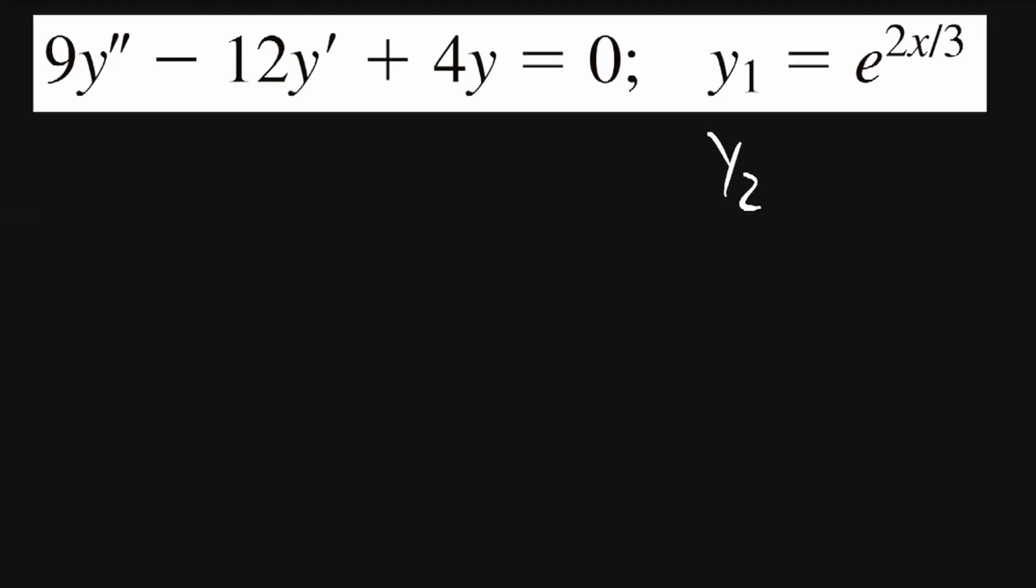For this problem, we need to find the second solution, y2. We'll first need to get it into the standard form of y double prime plus p of x times y prime plus q of x times y is equal to 0.